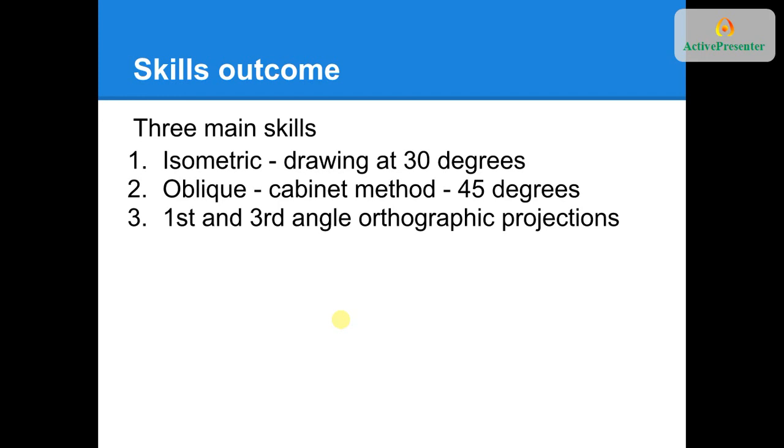When we talk about technical drawing, we generally break it down to three main skills. Isometric and oblique. Both are representing figures or parts in 3D, whereas our first and third angle orthographics show our parts in three different views.